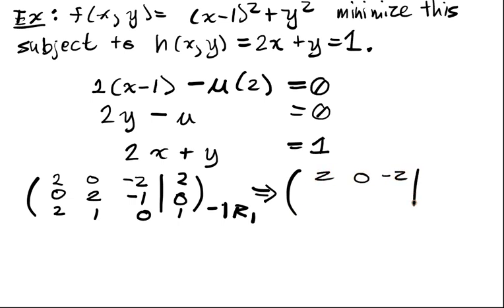2, 0, -2, 2; 0, 2, -1, 0; 0, 1, 2, -1. And now let's swap these two for simplicity's sake.